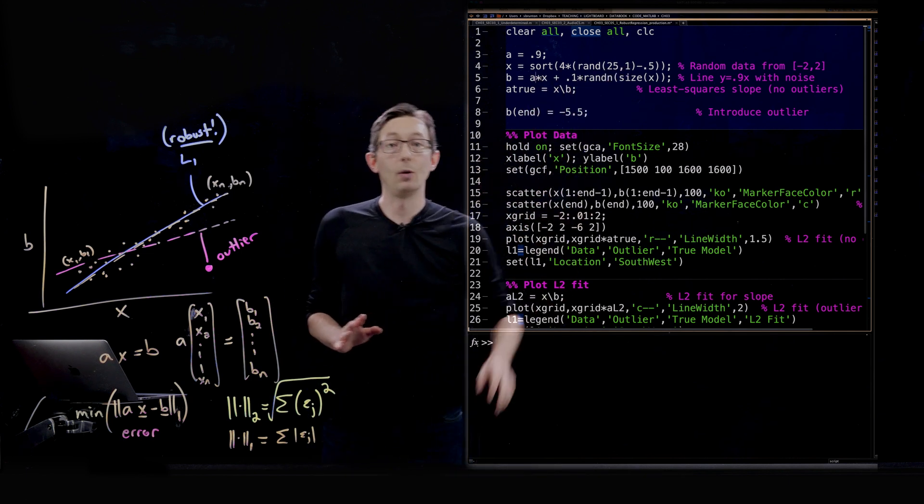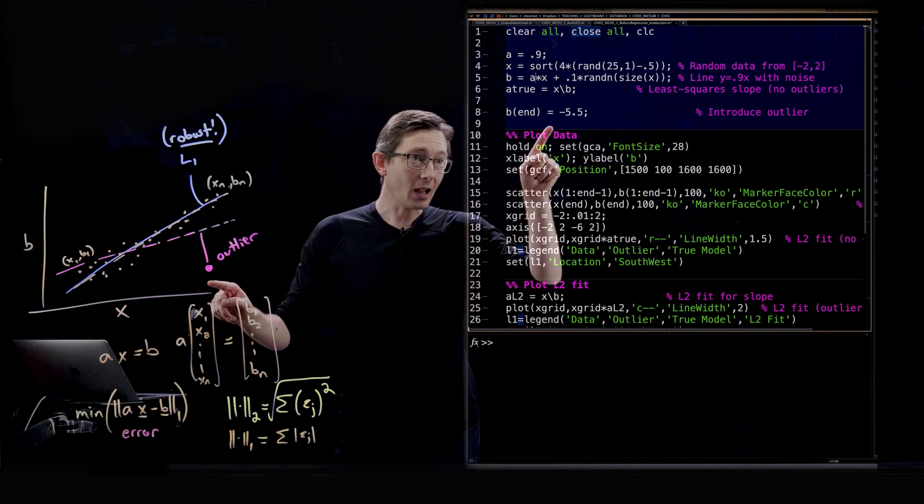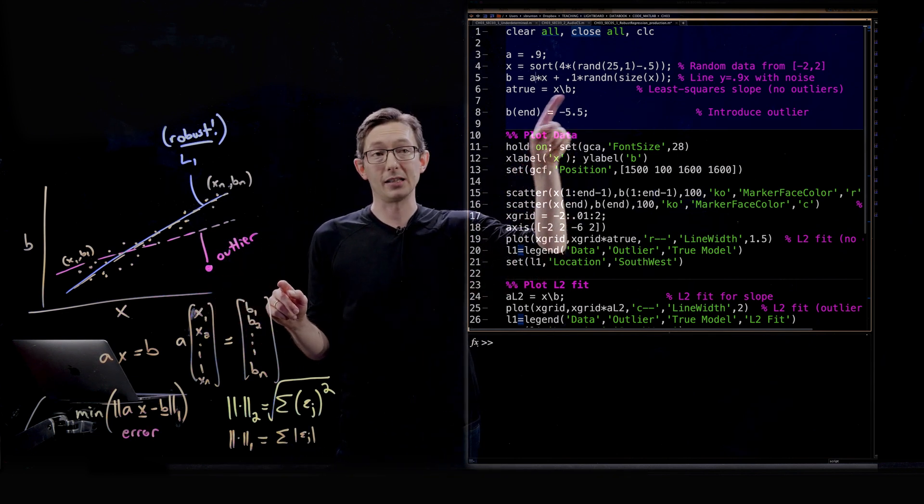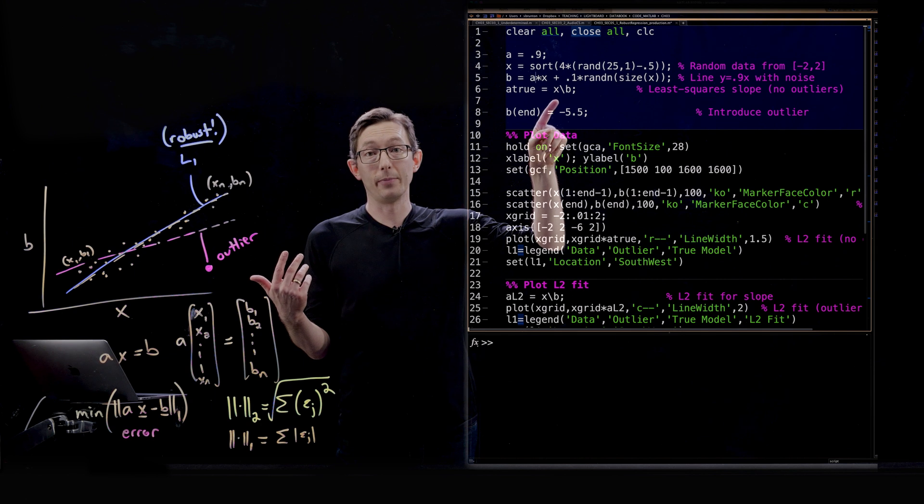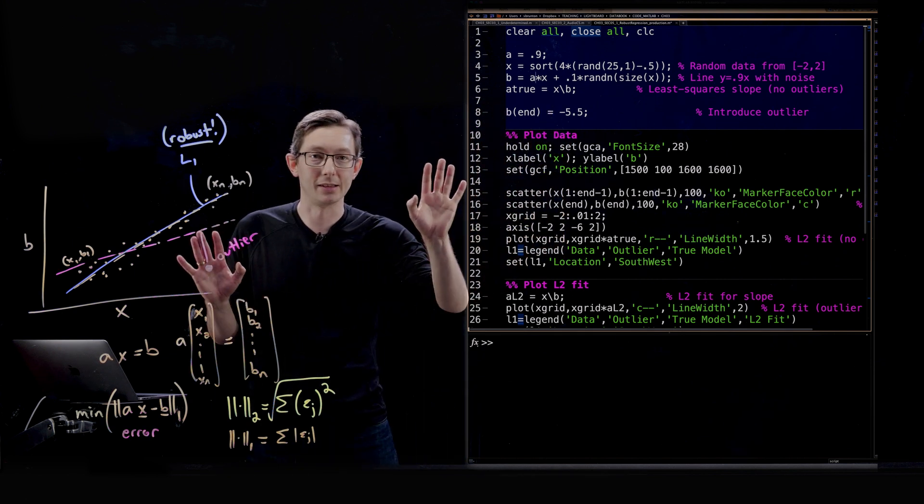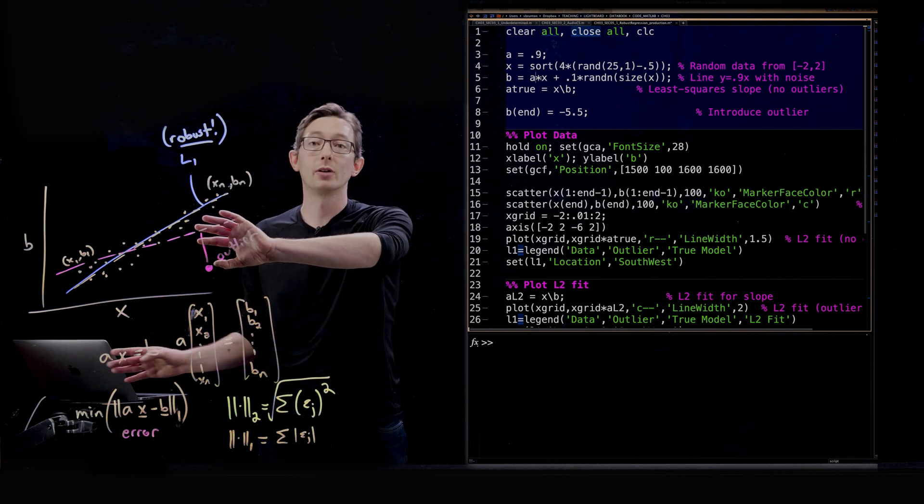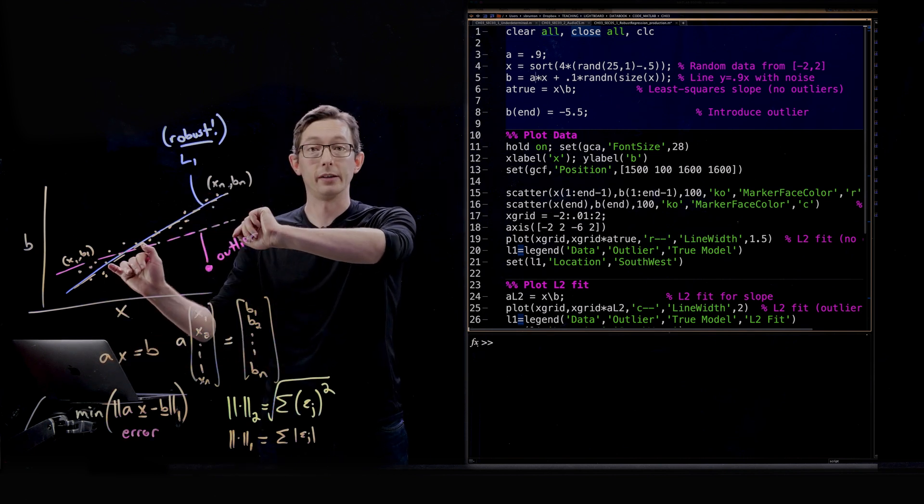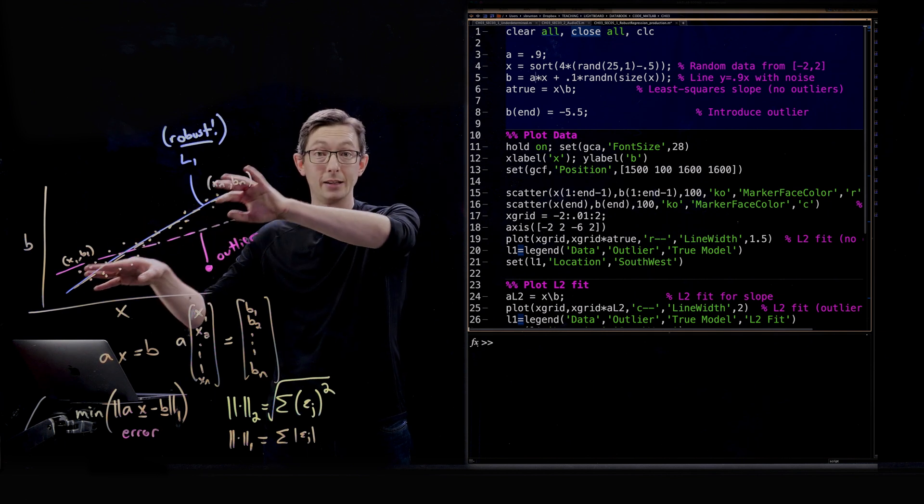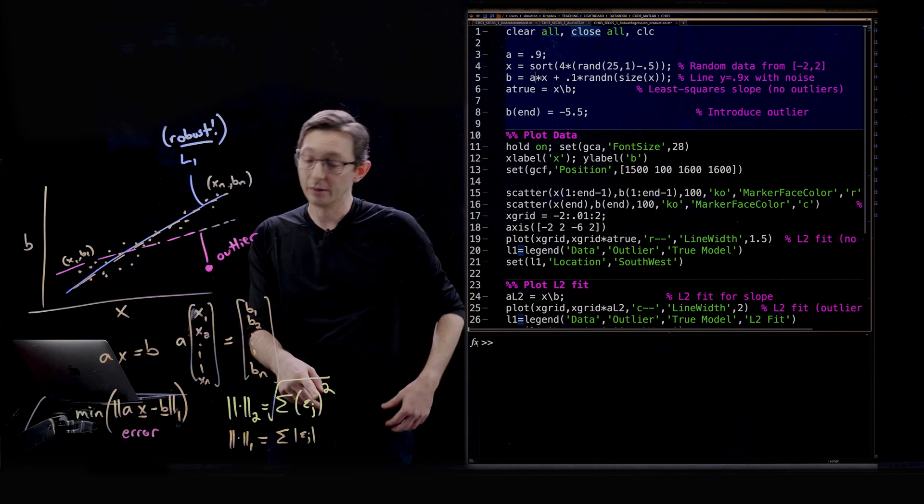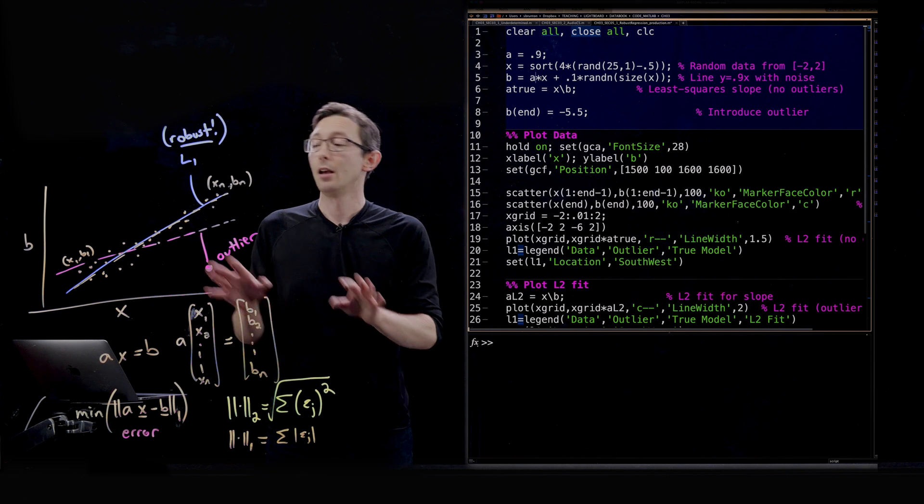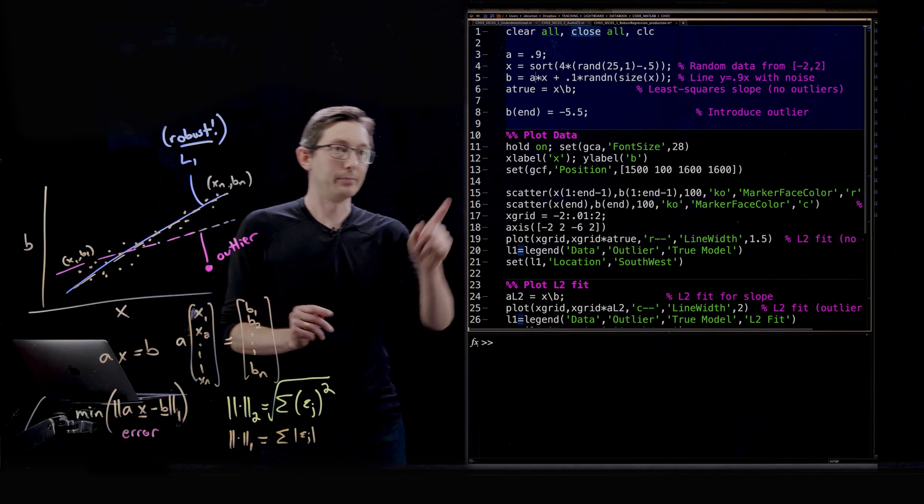And if I don't have any outliers, I could do a pretty good job of approximating the true slope with least squares. I should say this is really important: if this outlier wasn't here, least squares would do a great job if I had Gaussian white noise. If I had white noise measurement error but I had a lot of data points and no outliers, least squares would do a really good job. But with the outlier it's going to fail.